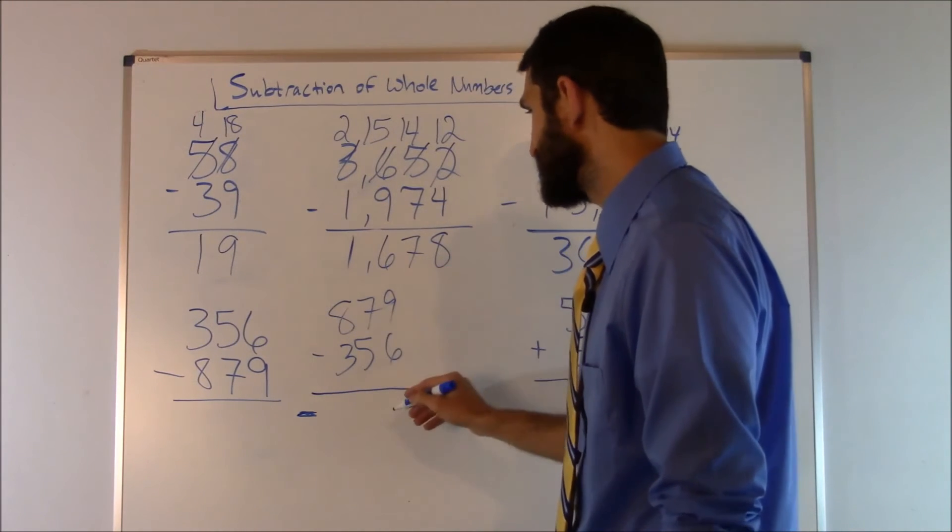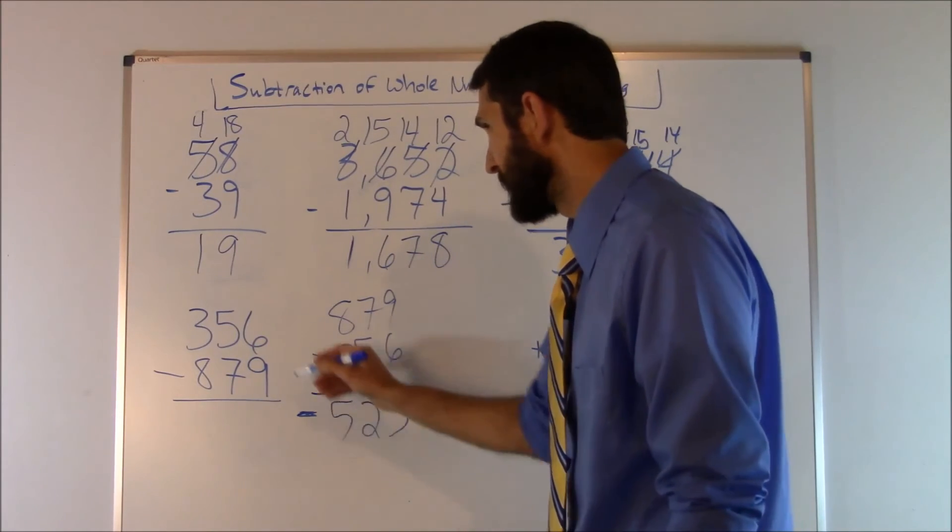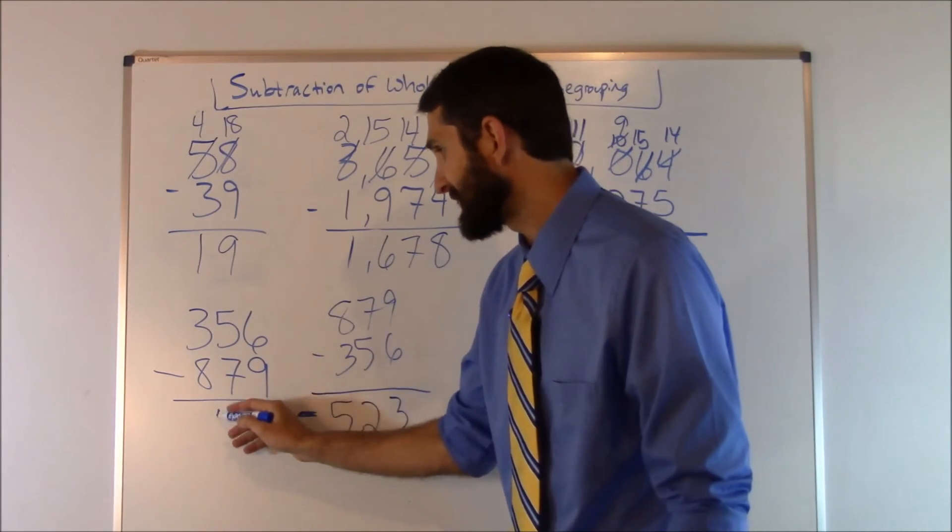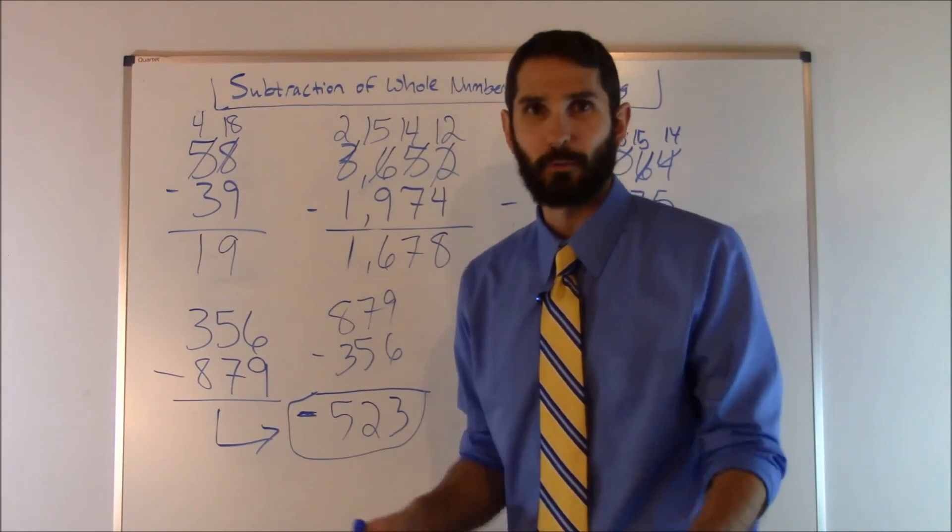Now nine minus six is three. Seven minus five is two. Eight minus three is five. So the answer to 356 minus 879 is negative 523. That's a quick way we can solve that one.